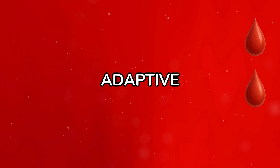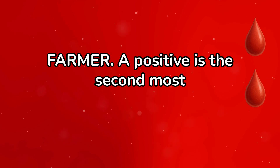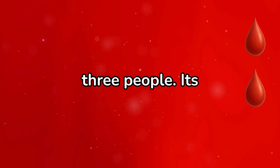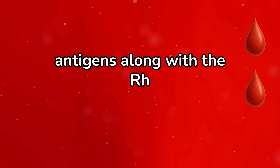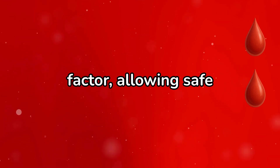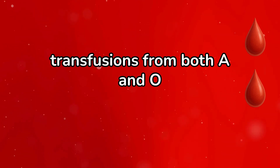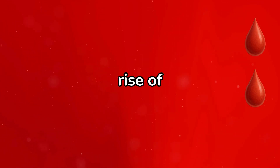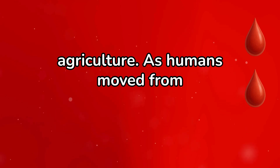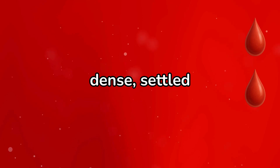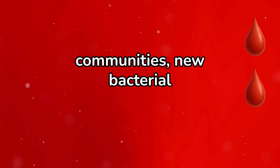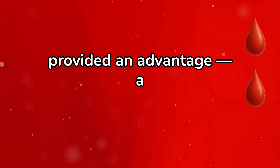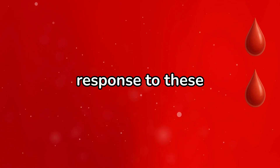A positive, the adaptive farmer. A positive is the second most common blood type worldwide, carried by roughly one in three people. Its red cells express A antigens along with the RH factor, allowing safe transfusions from both A and O positive donors. Historically, the A antigen is associated with the rise of agriculture. As humans moved from roaming the plains to living in dense, settled communities, new bacterial infections emerged. The A antigen provided an advantage — a stronger, more targeted immune response to these pathogens.